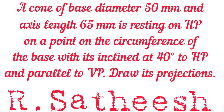Hi students, welcome. Now we are discussing how to draw the projection of a solid as per the given problem. Our given solid is a cone. A cone of base diameter 50mm and axis length 65mm is resting on HP on a point on the circumference of the base, with its axis inclined at 40 degrees to HP and parallel to VP. Draw its projection. The cone has one base and the opposite end is the apex.